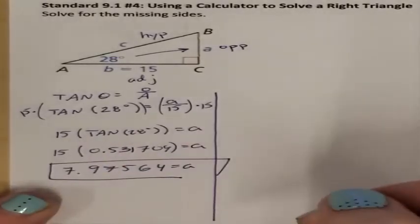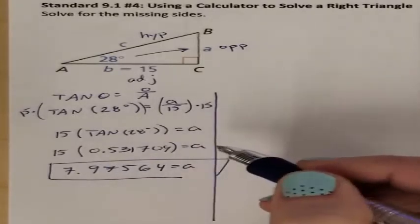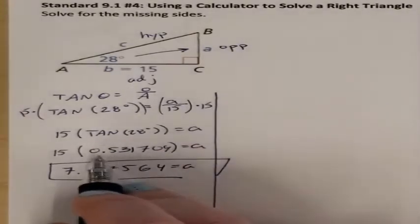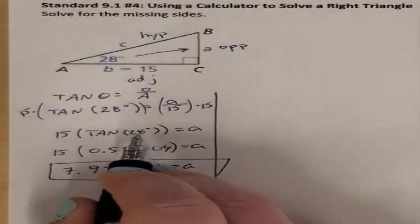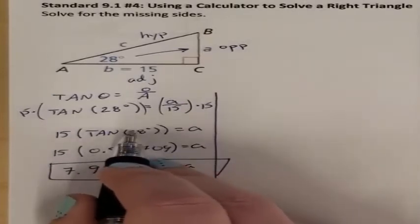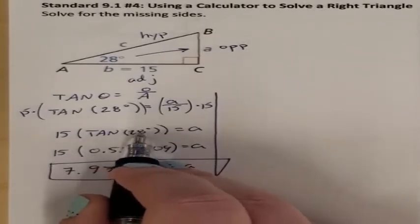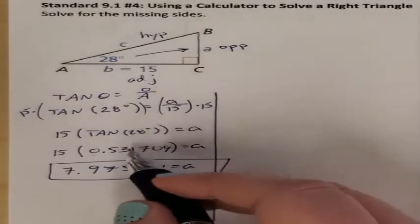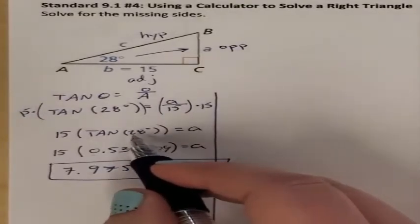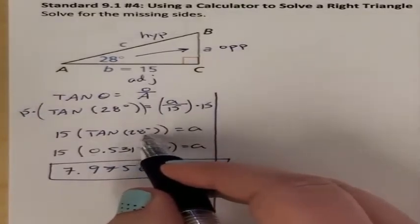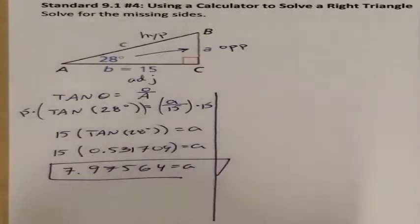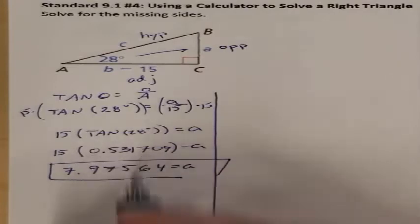If you type tangent of 28 degrees on your calculator and you don't get this, that means your calculator is not in degrees mode — it's accidentally in radians. You will need to verify or change the mode of your calculator. If tangent of 28 does not give you this, your calculator is in the wrong mode. Change your mode and then try again.